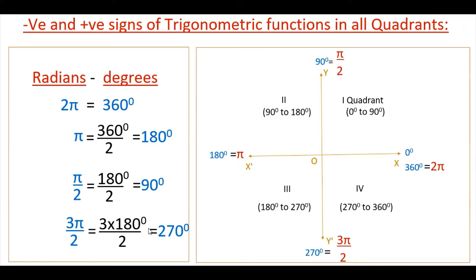Also, 3π/2 = 270°. So 2π, π, π/2, and 3π/2 are all in radians, while 360°, 180°, 90°, and 270° are their degree equivalents. You don't need to write the word 'radians'; you can write directly 2π, π, π/2, 3π/2. Please remember all these values.